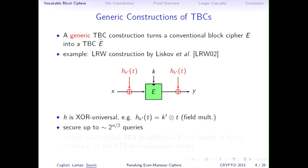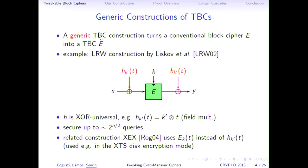It has been proved by Liskov, Rivest, and Wagner that LRW is secure up to 2^(n/2) queries, where n is the block size — the so-called birthday bound. There are other generic constructions, but this is the most practical one. There is also a related construction called XEX by Rogaway, which uses the block cipher instead of an independent XOR-universal hash function.